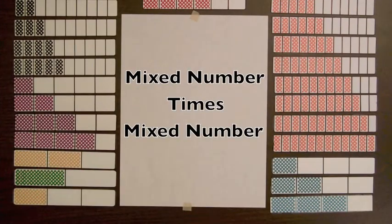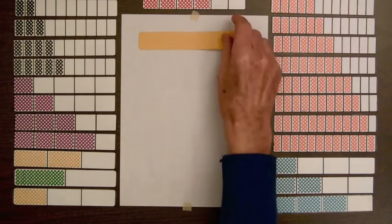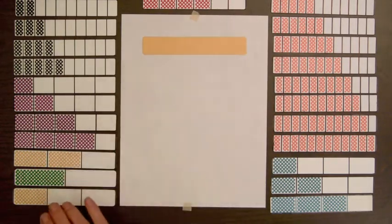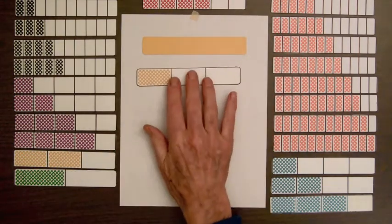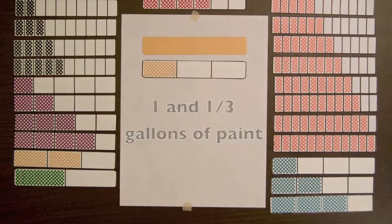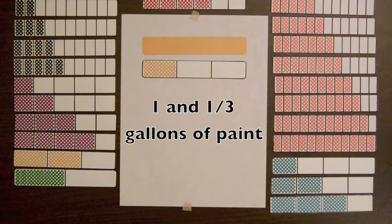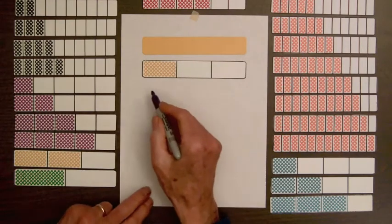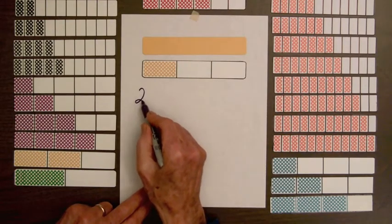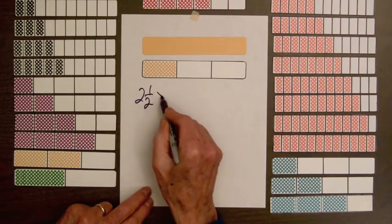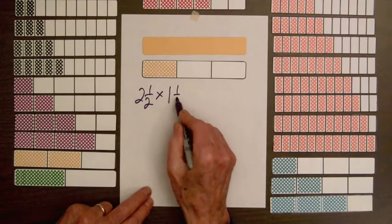For another example: if it takes one and one-third gallons of paint — one gallon and one-third of a gallon — to cover one wall, and two and a half walls will be painted, how much paint is needed? We are going to use this amount of paint two and a half times, so we have two and one-half times one and one-third.